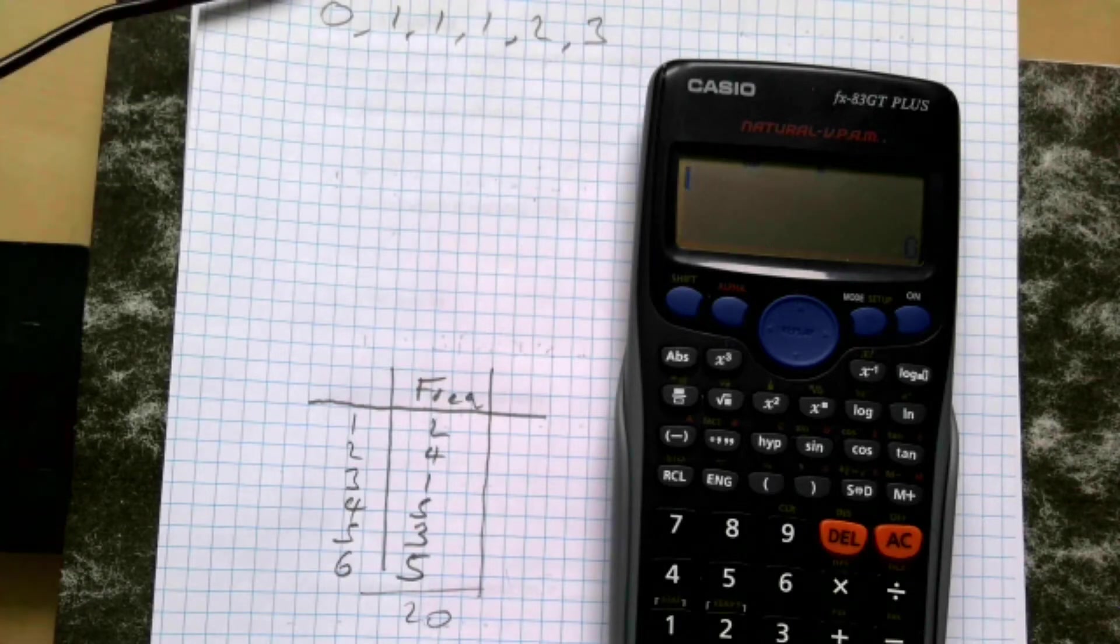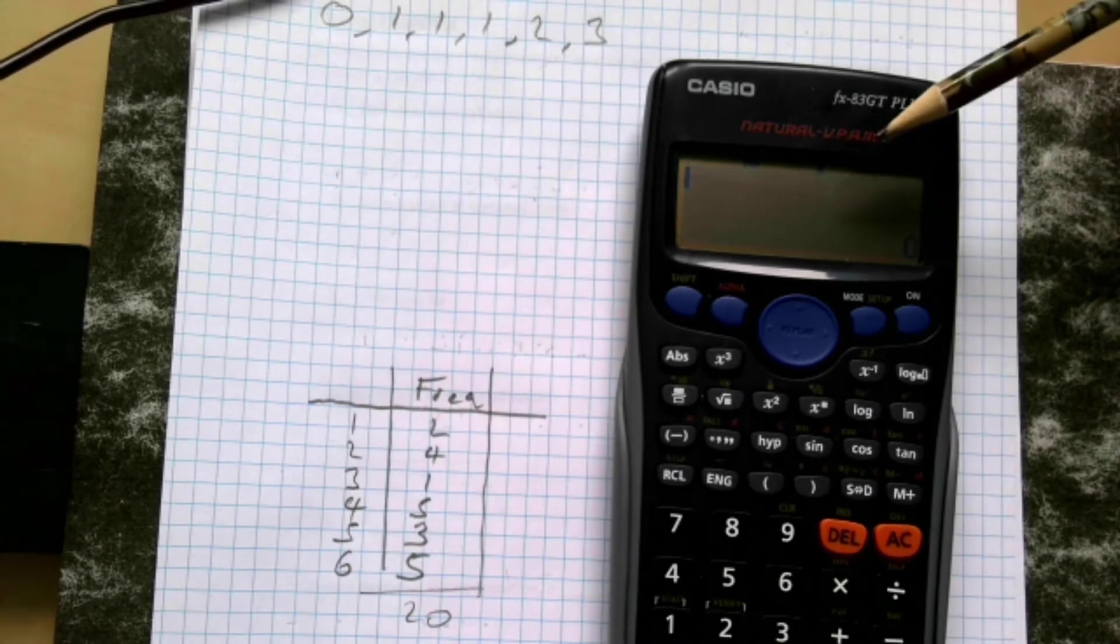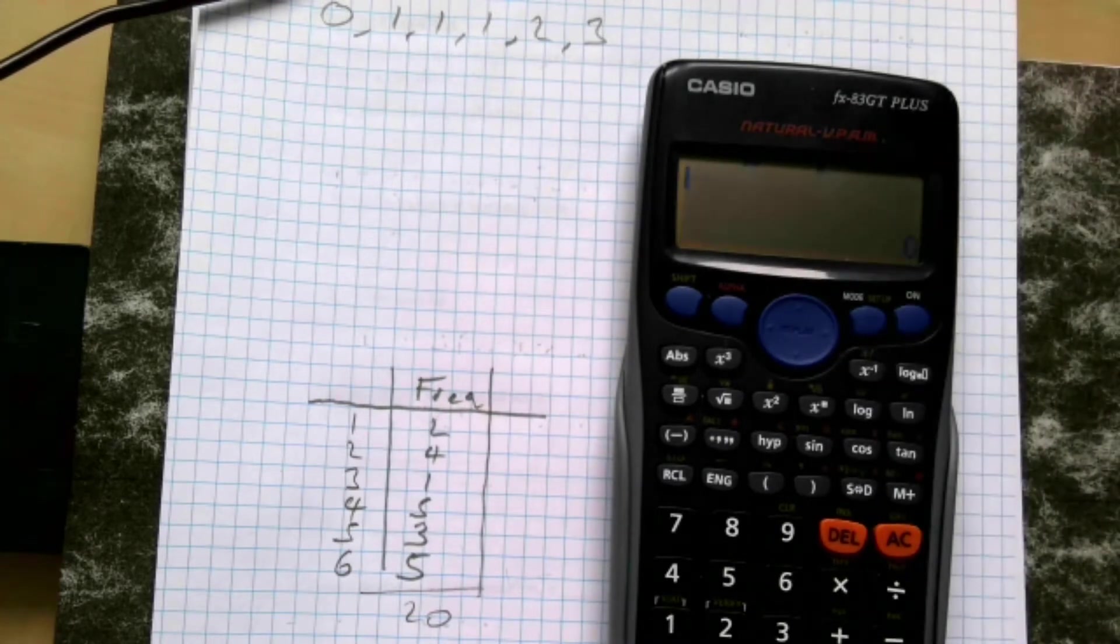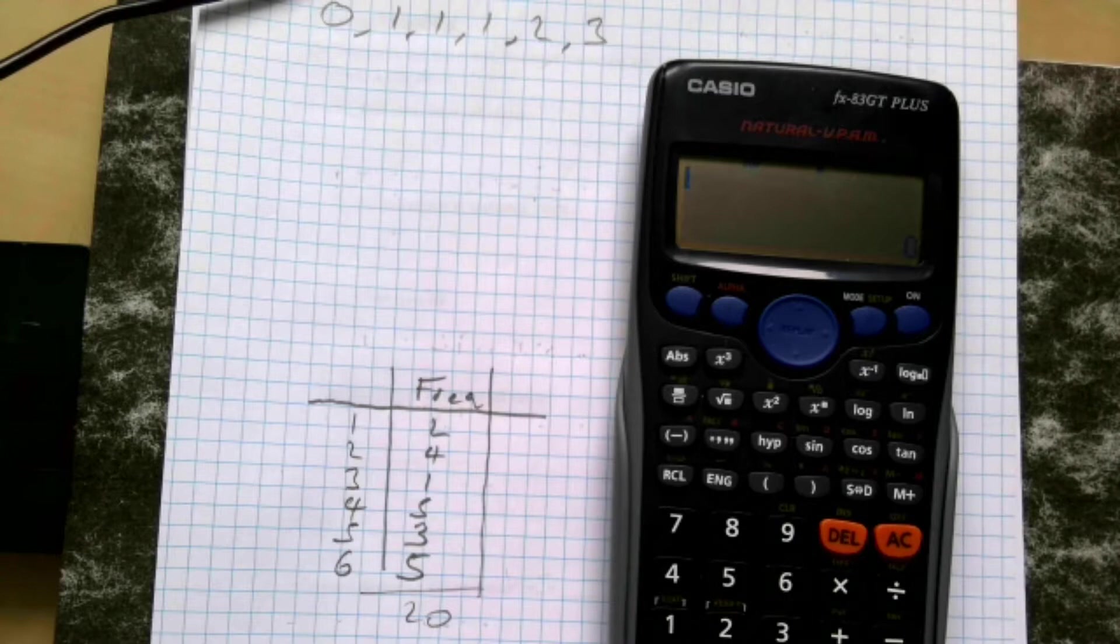Okay, this is about stats. We're taking a look at how you use calculators to work out standard deviation, variance, and other bits and pieces like that. We have this Casio calculator here.